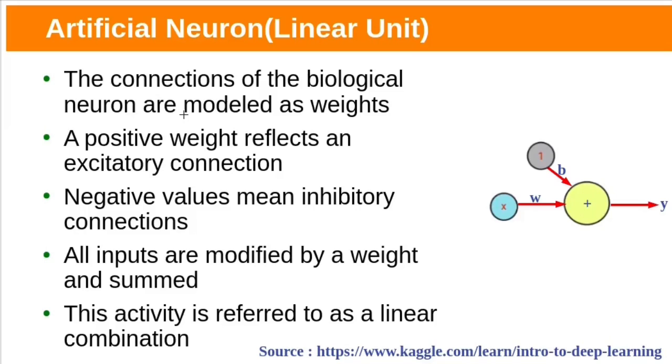From this we can say that artificial neuron is a simple mathematical function. The connections of biological neurons are modeled as weights. The positive weight reflects excitatory connection. If you have positive weight, this input has more importance. If you have negative weight, those are inhibitory connections, and for this input there will be less importance. All the inputs are modified and summed. This is referred to as linear combination.